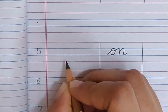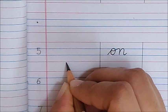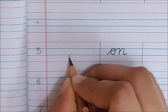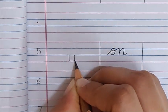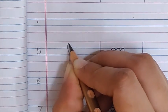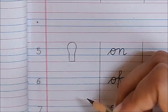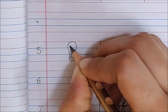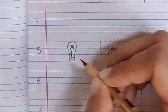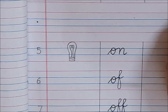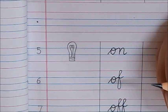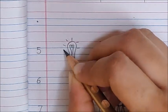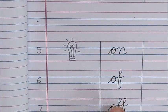And, another meaning of on is switch on. Like, please switch on the light. Children, I have a bulb here. And, tell me children, is it on? No. Please switch on the light. Now, my bulb is on. Now, let us read the next word.